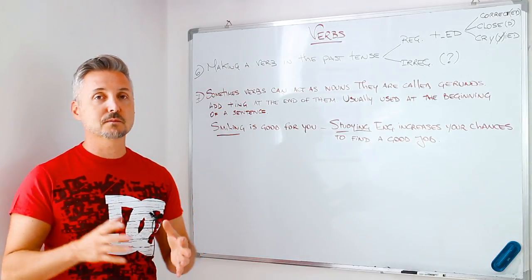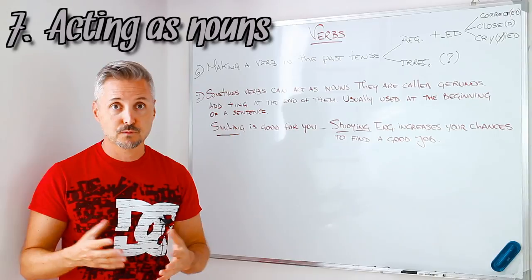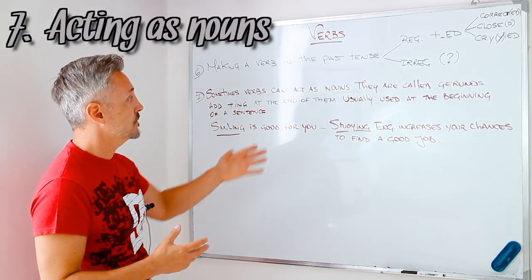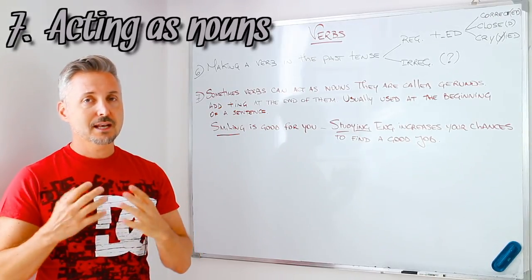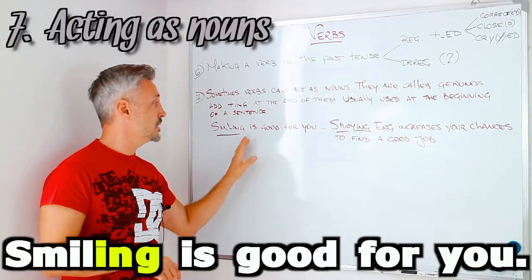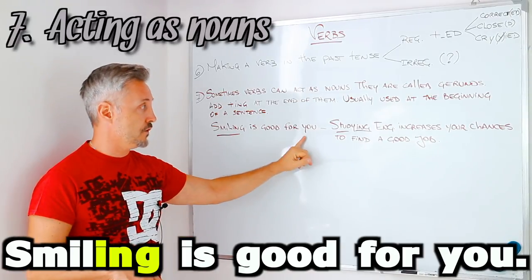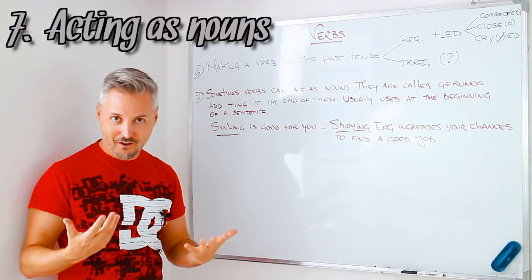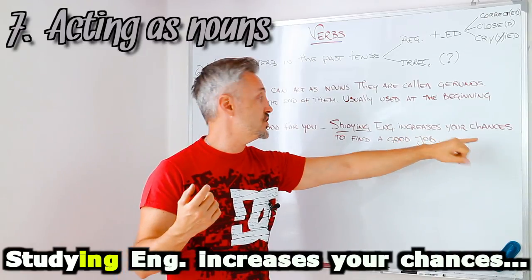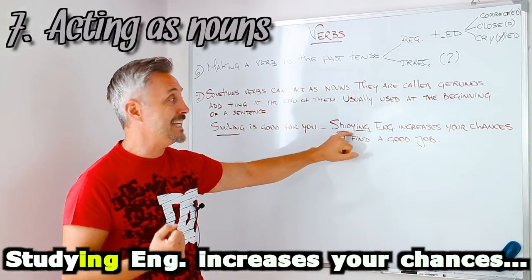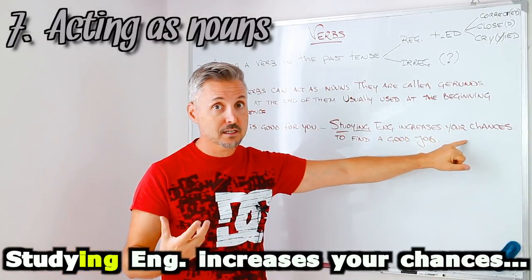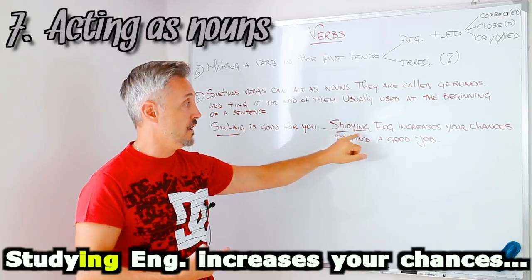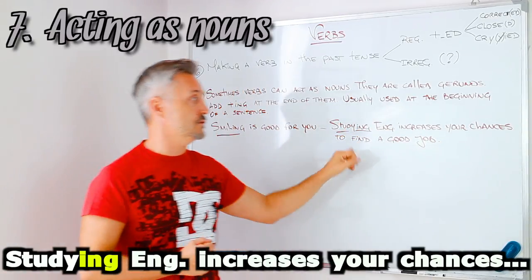Now, the last point that I want to mention about verbs is that sometimes verbs can act as nouns. They are called gerunds. You just add ing at the end of the verb. So, they are usually used at the beginning of a sentence. Let's look at my two examples. Smiling is good for you. Smiling is good for you. So, the act of smiling is good for you. So, you need to smile more. Studying English increases your chances to find a good job. So, studying, if you study English, you will find a good job. This is what it means. But studying, again, studying, is the gerund here. Studying English increases your chances to find a good job.